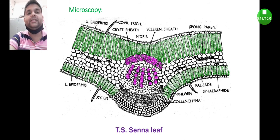In the microscopy, meaning the transverse section of Senna leaf, these are the explanations of the morphology and microscopy of Senna.